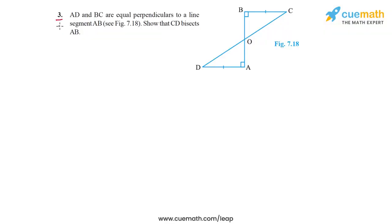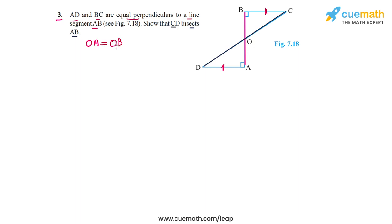In question 3, the problem statement says AD and BC are equal perpendiculars to a line segment AB. We have to show that CD bisects AB. Because CD intersects AB at O, we have to show that OA is equal to OB.